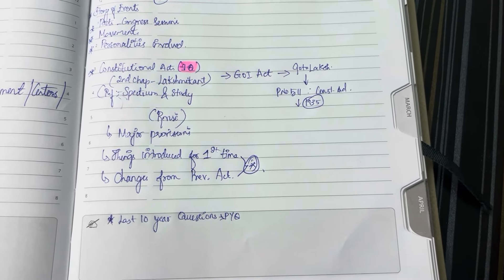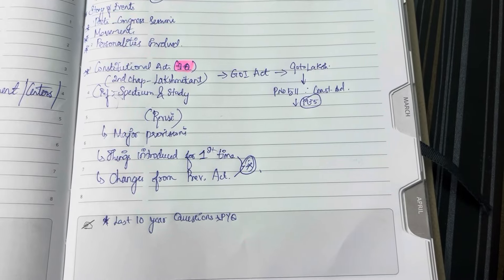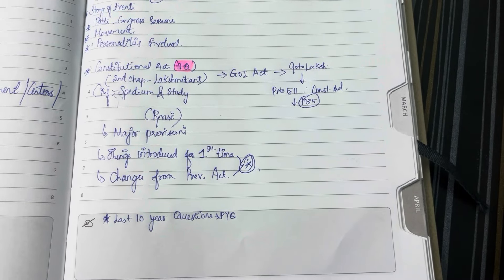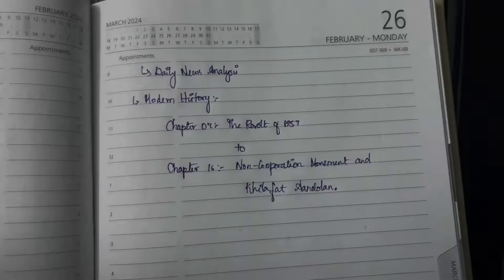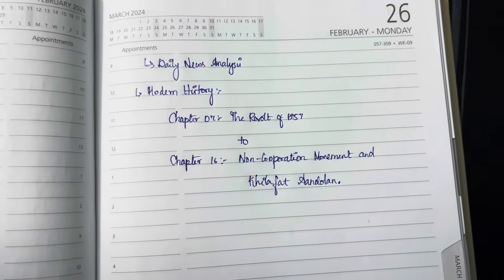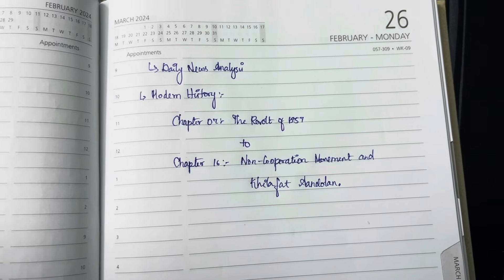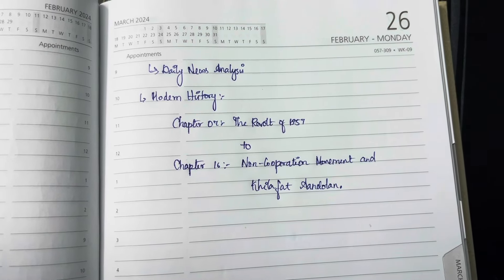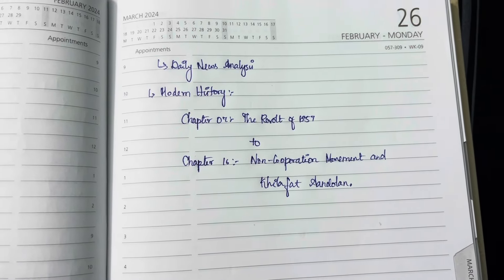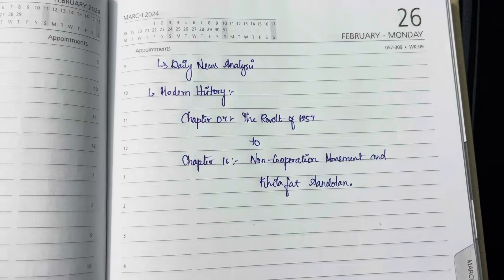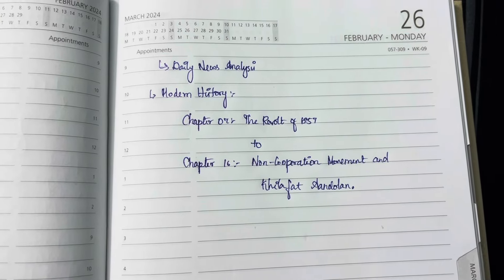Then I'm going to revise the entire topics. For the prelims, I'm going to start from chapter 7 — the Revolt of 1857 — up to chapter 16 on the Non-Cooperation Movement.